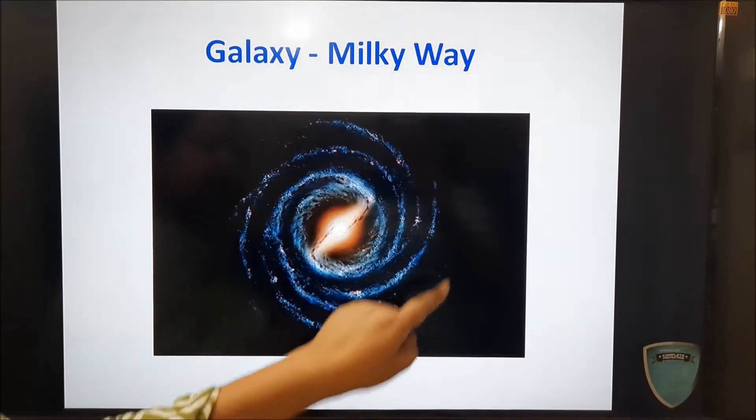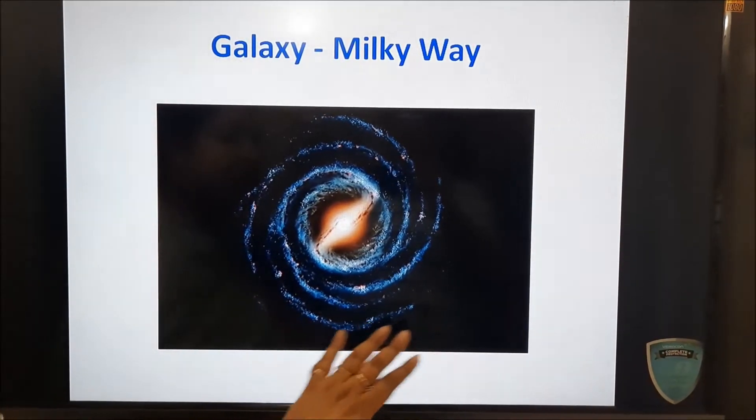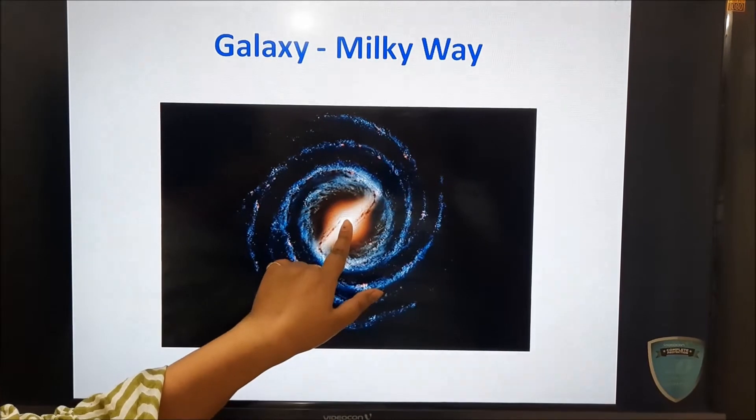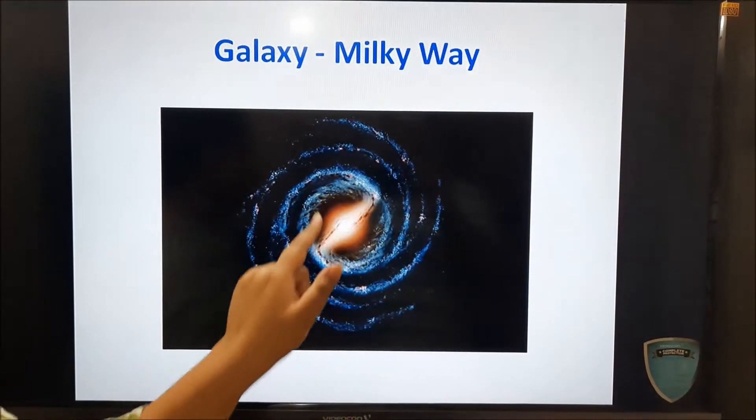So this is an image taken by NASA which shows the Milky Way. This is the sun here and there are planets, stars and satellites here.